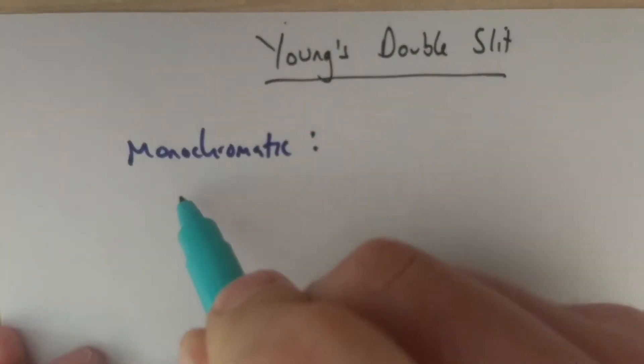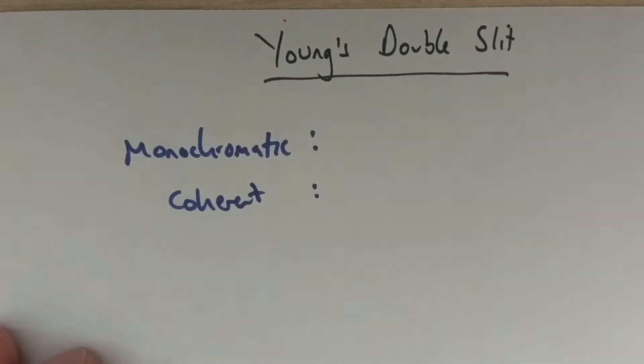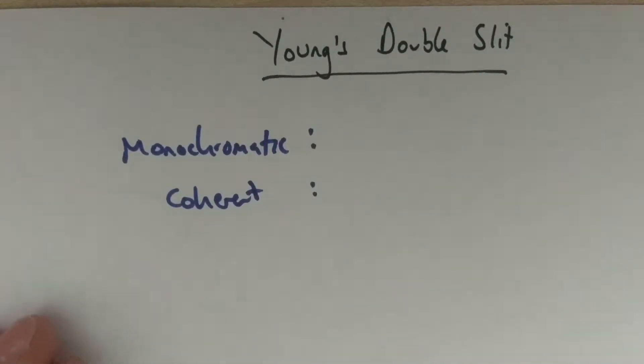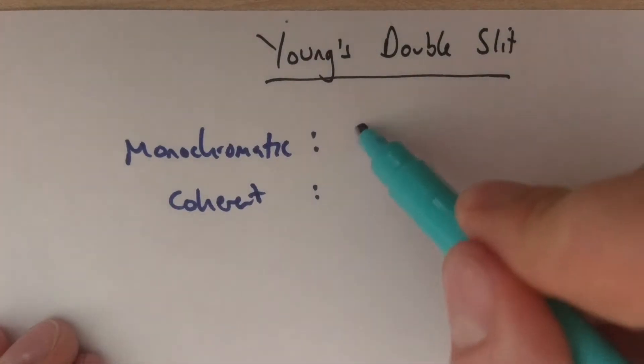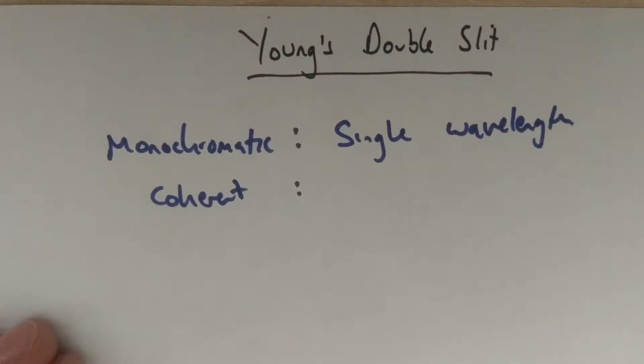We're going to look at two terms: monochromatic and coherent. You just need to be confident of using both of these terms. Monochromatic comes from the idea of single color, and if your light is monochromatic, it's made up of a single wavelength.